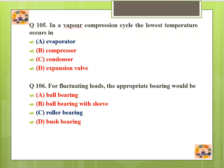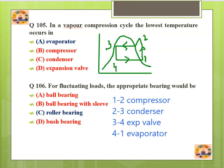Question number 105: In a vapor compression cycle, the lowest temperature occurs in the evaporator. Looking at the T-S diagram: 1→2 is the compressor, 2→3 is the condenser, 3→4 is the expansion valve, and 4→1 is the evaporator. From the diagram, at process 4→1 the temperature and pressure are both lowest, so the lowest temperature occurs in the evaporator.